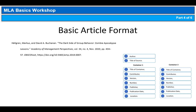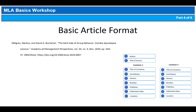Let's take a look at an article by two authors — the same format as you learned for books with two authors. The authors are Hallgren, Marcus, and David A. Buchanan. The article title is "The Dark Side of Group Behavior: Zombie Apocalypse Lessons," period, end quote. The container 1 elements are Academy of Management Perspectives in italics, comma, vol. 34, comma, no. 4, comma, November 2020, comma, pp. 434–15. The container 2 elements are EBSCOhost, comma, and the DOI, period. Remember, journal and database titles are in italics.